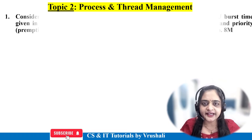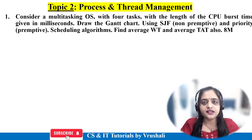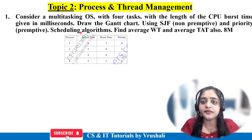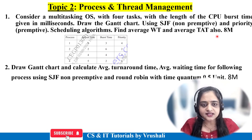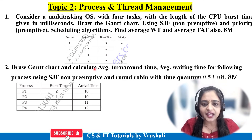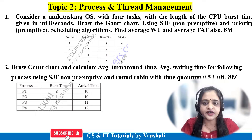Now the next unit is process and thread management. Here 50% of the questions are based on numericals and 50% are based on theory. For numerical questions, they have asked: given process arrival time and burst time, apply SJF non-preemptive scheduling algorithm and priority preemptive scheduling algorithm, and find out average waiting time and average turnaround time for eight marks. Similarly, they have asked to apply SJF non-preemptive and round robin scheduling algorithm, calculate average turnaround time, average waiting time, and also draw a Gantt chart. These questions are generally asked for eight marks, and we have already discussed how to solve these step-wise.